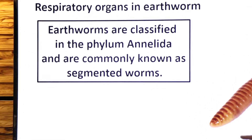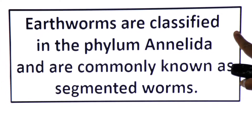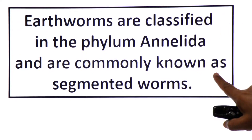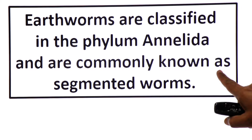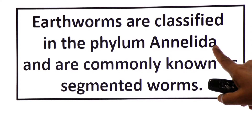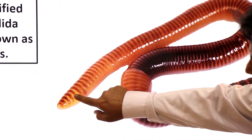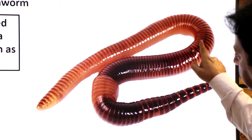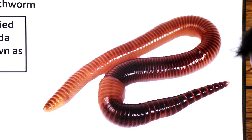Earthworms are classified in the phylum Annelida and are commonly known as segmented worms. The body of the earthworm is divided into ring-like parts known as segments, that is why it is commonly known as segmented worm.